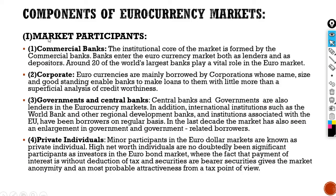The first component is market participants. The institutional core of the market is formed by commercial banks. Banks enter the Euro currency market both as lenders and as depositors. Around 20% of the world's largest banks play a vital role in the Euro market. The second participant in the Euro currency market are corporates. Euro currencies are mainly borrowed by corporations whose name, size, and good standing enables banks to make loans to them with little more than a superficial analysis of creditworthiness.